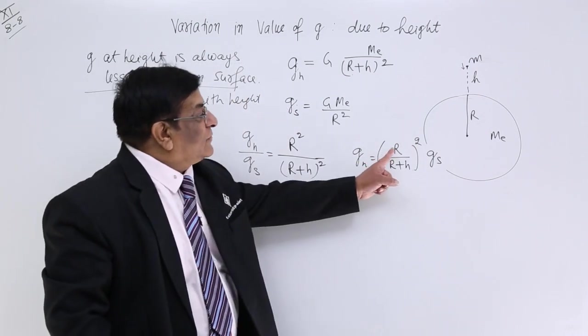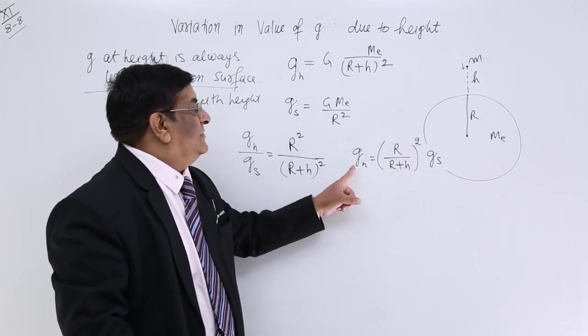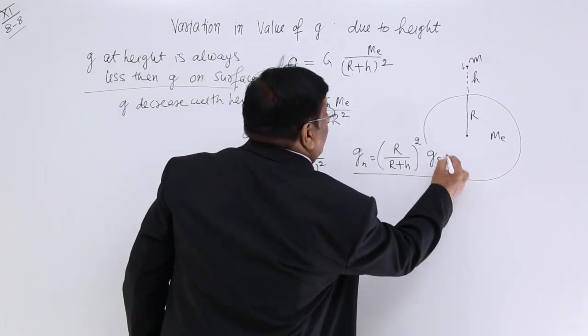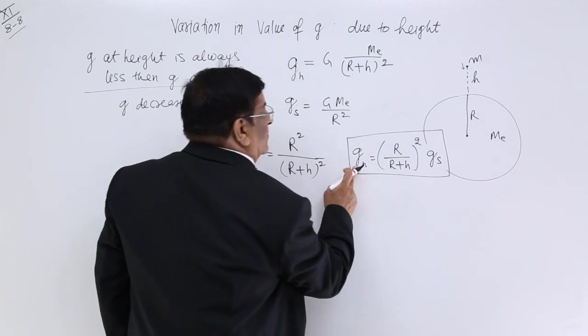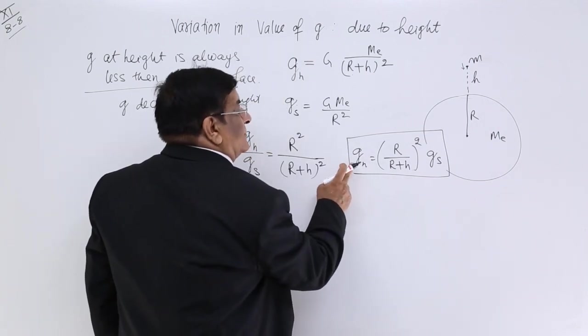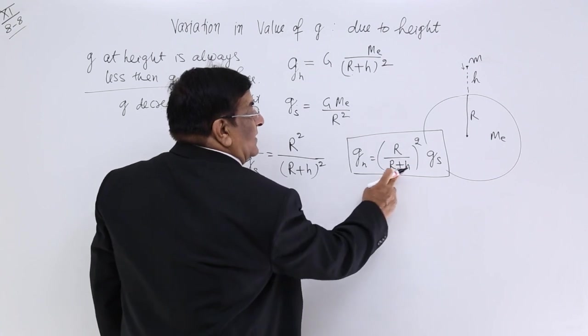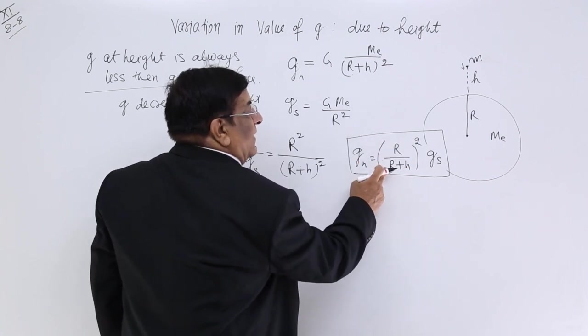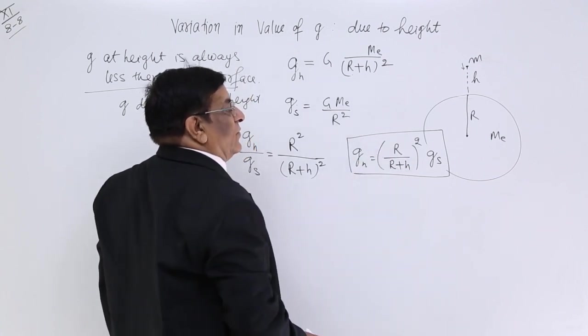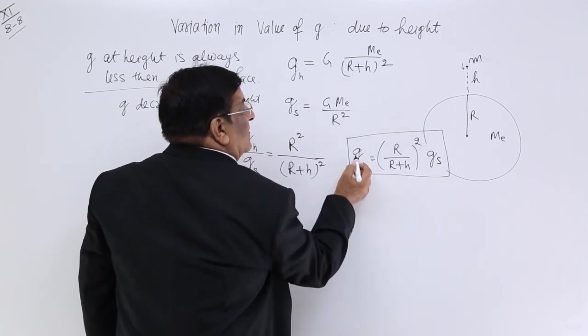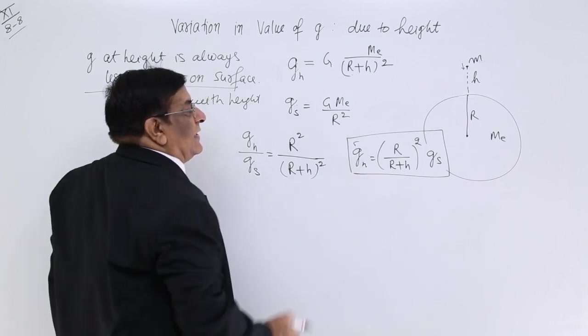And this quantity is less than 1, that means g_h is smaller than g_s. So this is the equation which helps us to find out g at a height H. We will put the value of H here, we will put the value of R here, that is 6400 kilometers. And this is acceleration at surface. We will find acceleration at a height H.